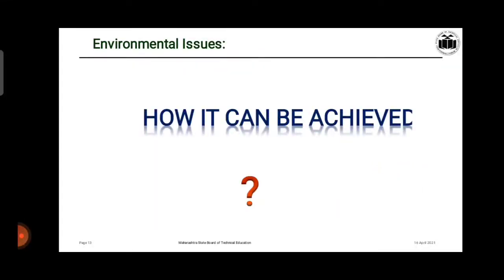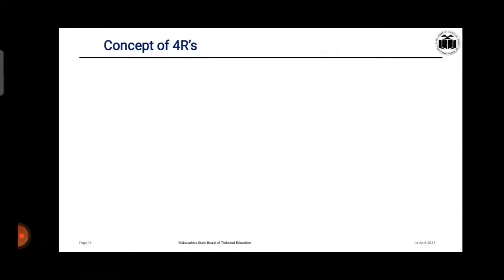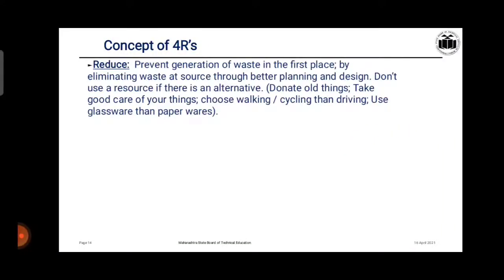There is a great concept of 4R. The first R is Reduce. In Reduce, we prevent generation of waste in the first place by eliminating waste at source through better planning and design. Don't use a resource if there is an alternative. Donate old things, take good care of your belongings, choose walking or cycling over driving, and use glassware instead of paper. In daily life, we will be able to reduce a lot of waste.